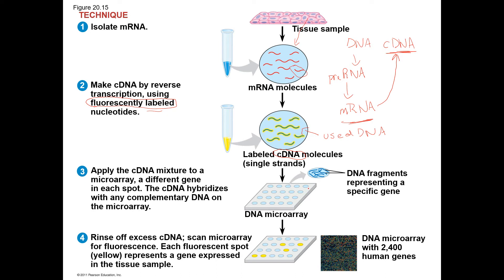Here's my microarray — a plastic dish where each well, viewed from the side, goes down. On the bottom I'm going to put a probe. Probe one for gene one, probe two in the next well, probe three, probe four, probe five, and so on. Then I'm going to take this fluorescently-labeled cDNA and put it in. Then I wash it off. Only the cDNA that hybridizes with a probe — say it matches probe four — will be stuck in that well.